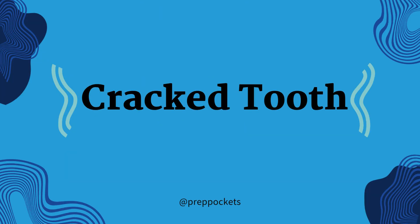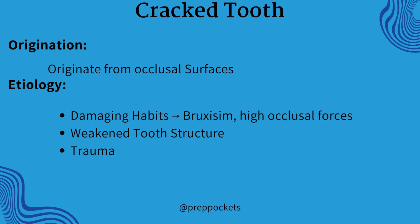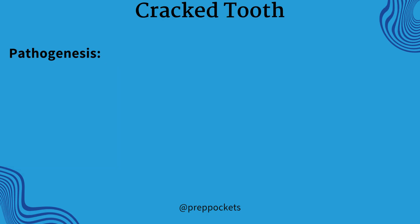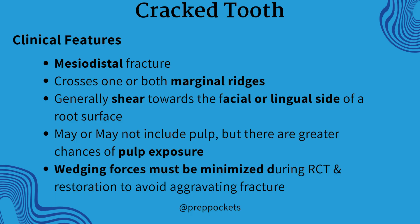The next type is the cracked tooth, also known as a greenstick fracture, which is an incomplete fracture starting from the crown and extending subgingivally, usually directed mesiodistally. It originates from occlusal surfaces and may extend to both marginal ridges. It happens because of trauma, damaging habits, high occlusal forces, and bruxism. Due to greater occlusal forces in the posterior region exceeding dentinal strength, it shows a nutcracker effect. Clinical features involve a mesiodistal fracture crossing one or both marginal ridges, generally shearing toward the facial or lingual side of the root surface.